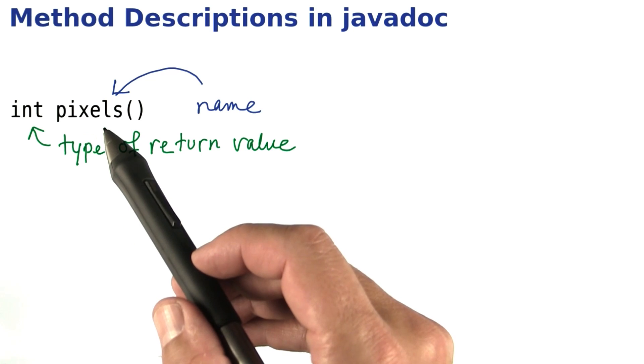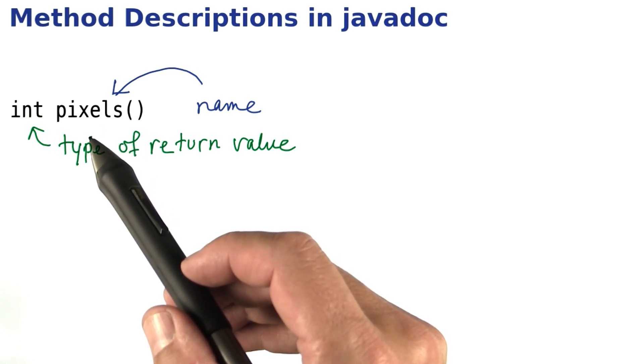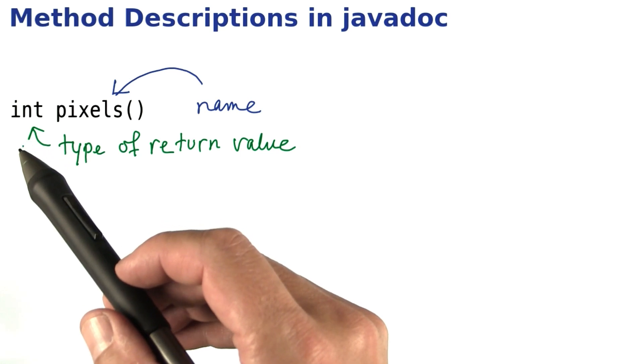The pixels method returns the number of pixels in an image as an integer, since you can't have half a pixel.